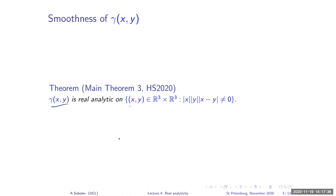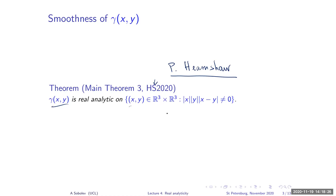The main theorem — Theorem 3 from Lecture 1 — tells us that gamma as a function of two variables is real analytic in x and y, away from the diagonal: x and y should not be zero, and they should not coincide with each other. This result is obtained by myself and Peter Herrenshaw, my PhD student at UCL. When we were doing this, of course everybody knows what a real analytic function is, but we had never worked with real analytic functions before, so we had to learn some elementary stuff.